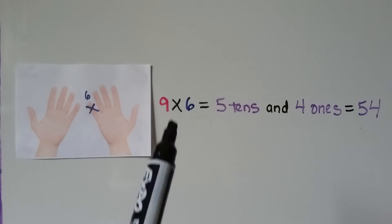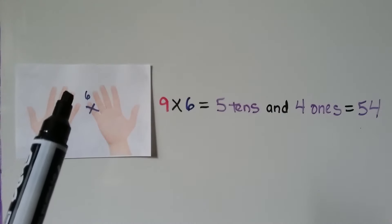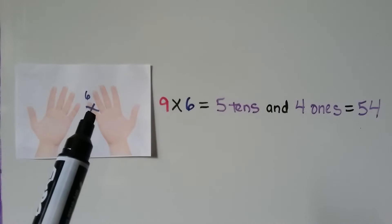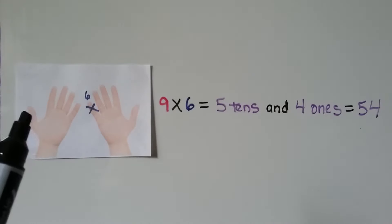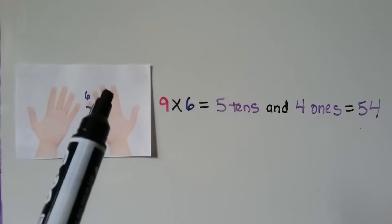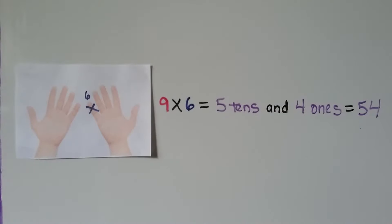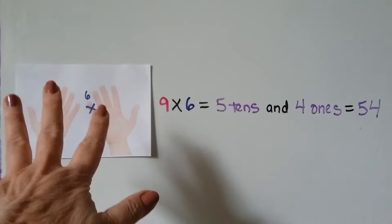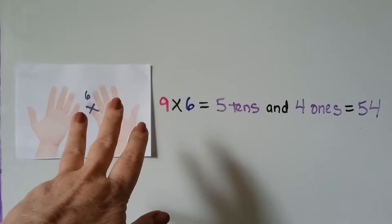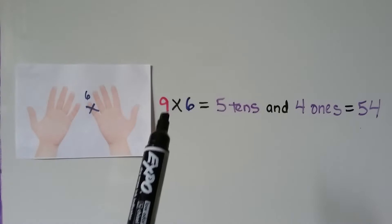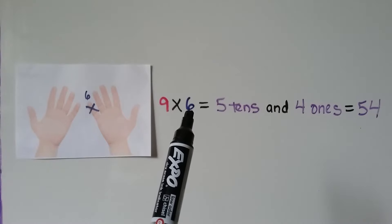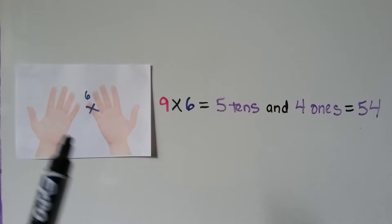We can try it with 9 times 6. Count to the 6th finger: 1, 2, 3, 4, 5, 6 — bend that finger down. On the left side of the bent finger we have 1, 2, 3, 4, 5 — that's 5 tens. On the right side we have 1, 2, 3, 4 — that's 4 ones. 5 tens and 4 ones equals 54, so 9 times 6 equals 54. You can try this yourself — it doesn't matter which way your hands face.